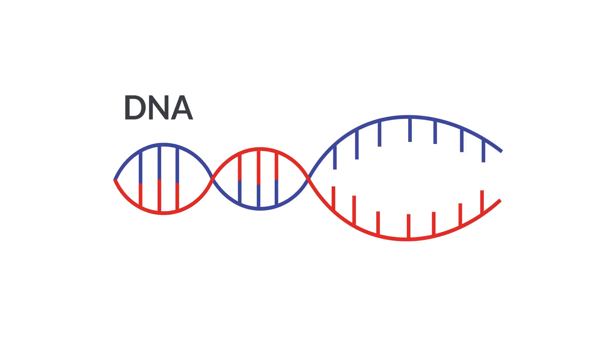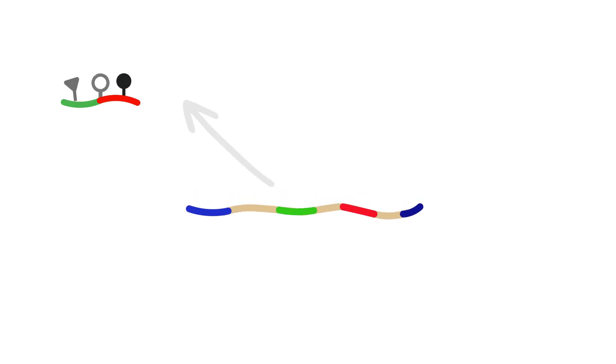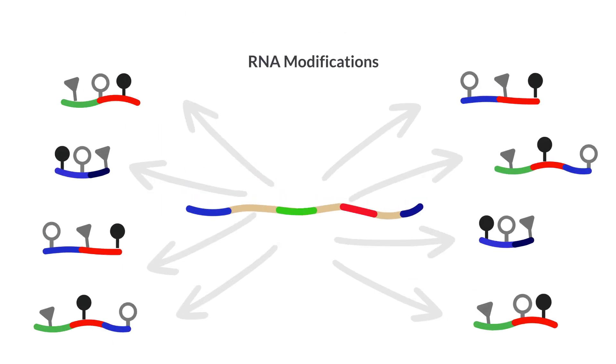RNA is an essential molecule in all living cells. It creates proteins from DNA and plays other important biological roles. Chemical changes to RNA, known as RNA modifications, can influence the molecule's structure and function.